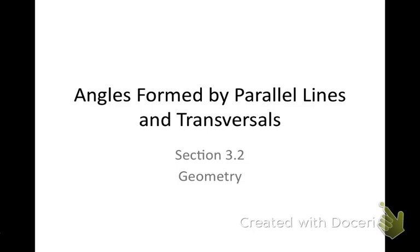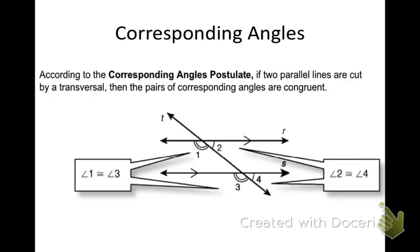Who can remember the pairs of angles we talked about Friday? Corresponding angles — yeah, we talked about corresponding angles. Now, we're going to talk about those today in parallel lines. So if two parallel lines are cut by a transversal, then the pairs of corresponding angles are congruent. So if I have two lines that are parallel, cut by this transversal here, my corresponding angles are congruent — meaning they're going to be the same.